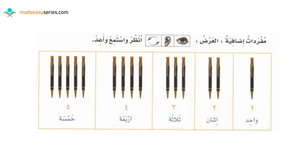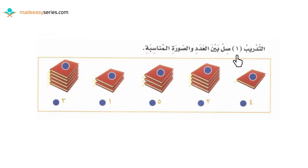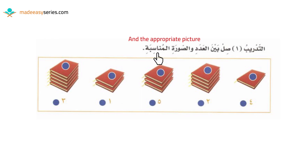Now let's move on to التدريب الأول, the first exercise. It says صل بين العدد والصورة المناسبة — connect the number to the appropriate picture. In front of us we have pictures of books from one book to five books, and underneath them we have the numbers one to five. Connect the number to the correct number of books. Pause the video, do the answers by yourselves, then we'll check together.